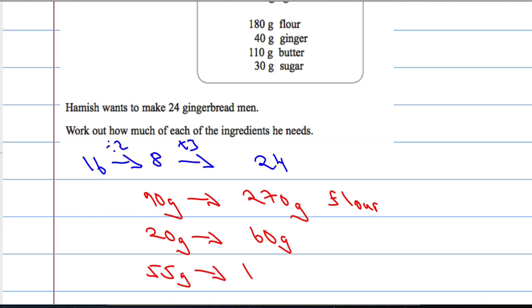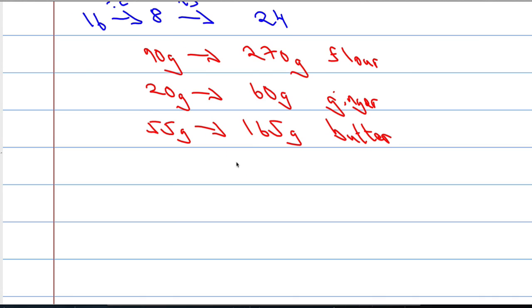55 grams of butter would be half, and then times it by 3, that's going to give me 165 grams of butter. And then finally 30 grams of sugar, so we would have 15 grams for 8 people, which means we will need 45 grams of sugar for 24 people.